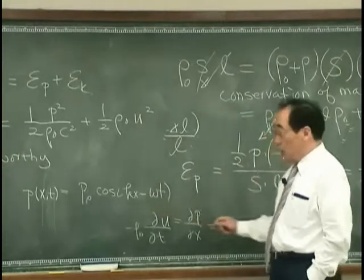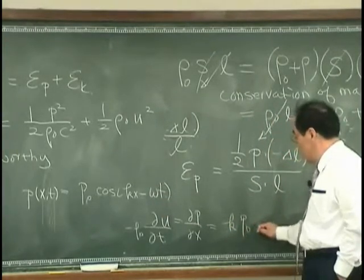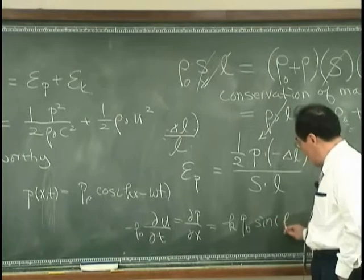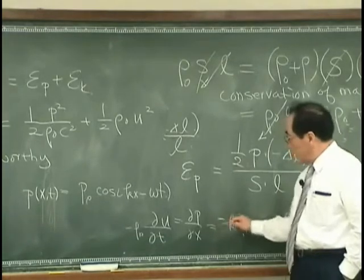Therefore, the velocity is k P0 sine KX minus omega T, and I have to put minus.